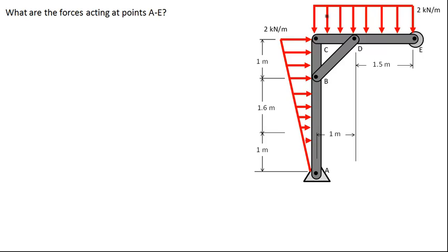In this problem we're being asked to find the forces acting at the five points A through E on this frame. There's a uniform distributed load acting downward on member CDE with a value of two kilonewtons per meter of length. There's also a load acting horizontally at members A, B, and C that varies linearly from zero at point A up to a maximum value of two kilonewtons per meter at the top.